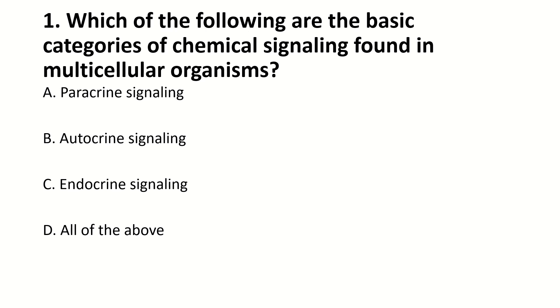Which of the following are the basic categories of chemical signaling found in multicellular organisms? Right answer is D — all of the above — paracrine signaling, autocrine signaling, and endocrine signaling.